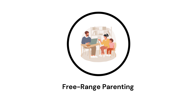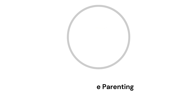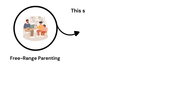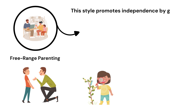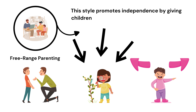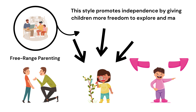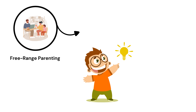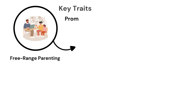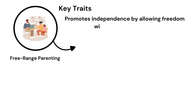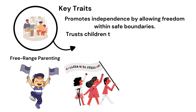Free-Range Parenting. This style promotes independence by giving children more freedom to explore and make decisions. Free-range parents believe in letting kids learn by doing. Key Traits: Promotes independence by allowing freedom within safe boundaries.